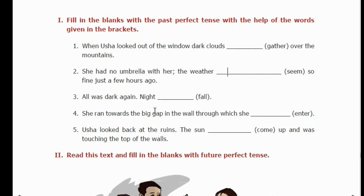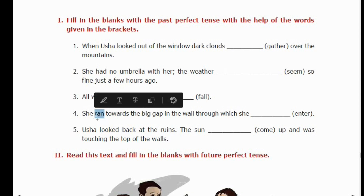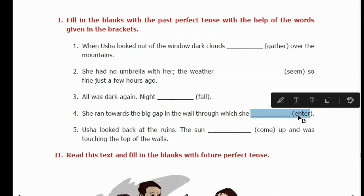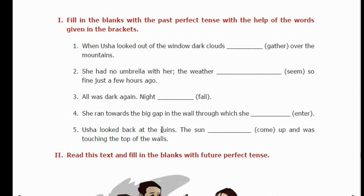She ran towards the big gap in the wall through which she had entered. So Usha ran towards that gap. She had entered through that gap earlier — that entering happened before she ran back. So 'ran' is simple past tense, and 'had entered' is Past Perfect Tense, because she had already entered through that gap before the running action.